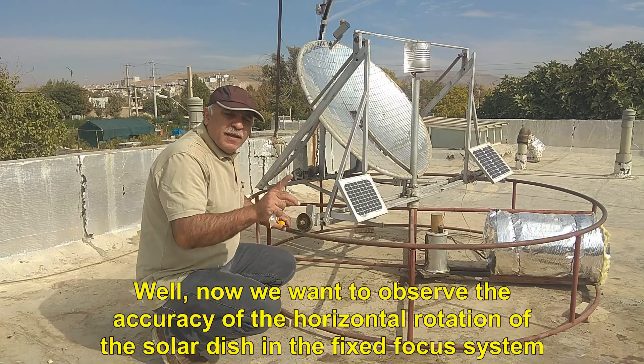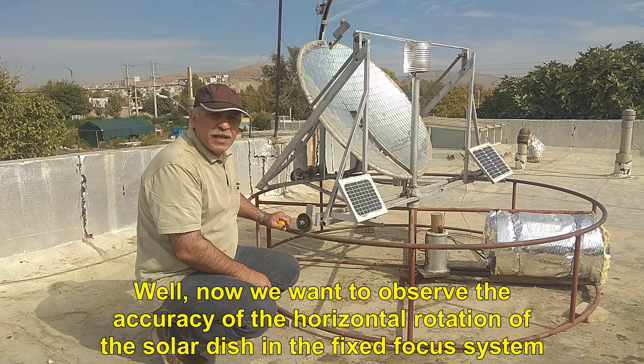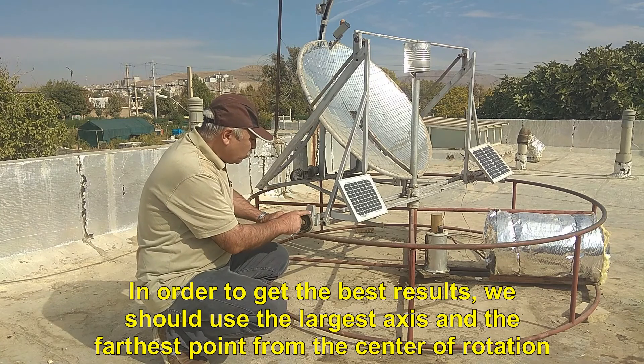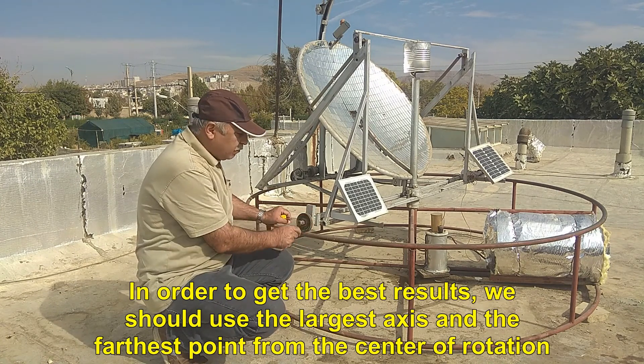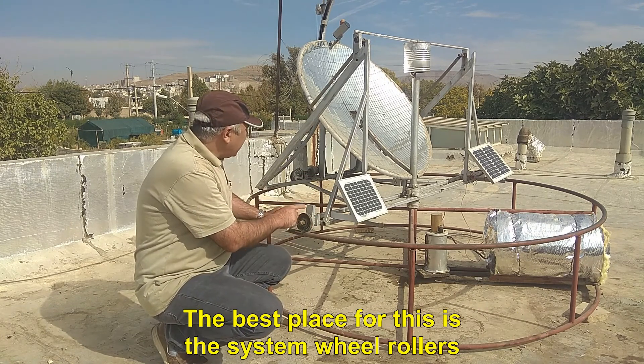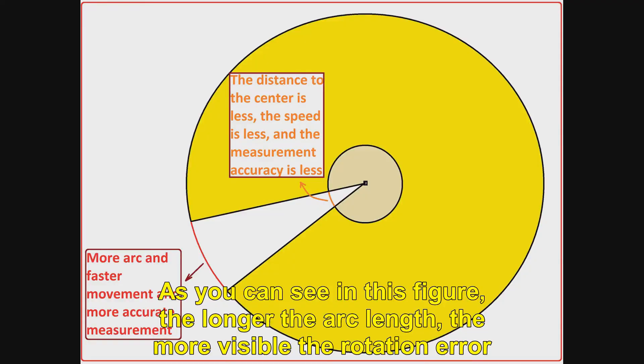Well, now we want to observe the accuracy of the horizontal rotation of the solar dish in the fixed focus system. In order to get the best results, we should use the largest axis and the farthest point from the center of rotation. The best place for this is the system wheel rollers. As you can see in this figure, the longer the arc length, the more visible the rotation error.